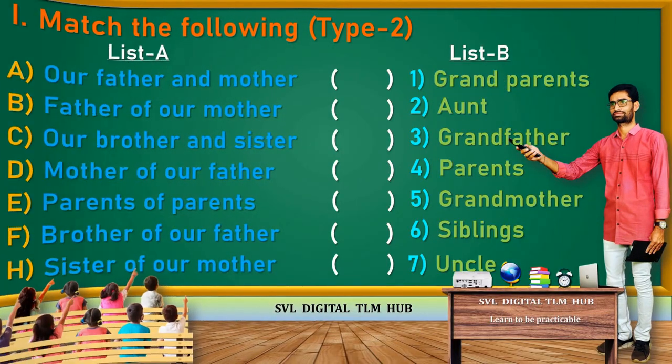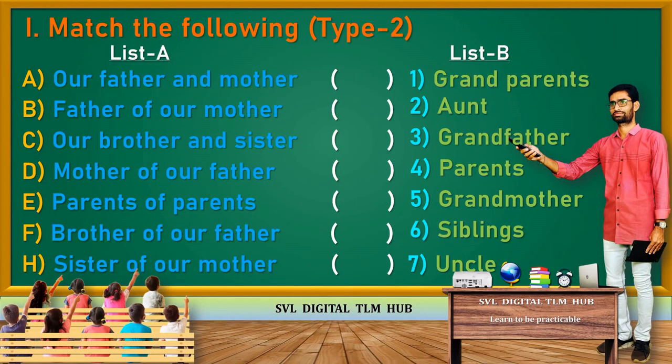Next one. Match the following, Type 2. List A, List B. Under List A: A. Our Father and Mother. B. Father of Our Mother. C. Our Brother and Sister. D. Mother of Our Father. E. Parents of Parents. F. Brother of Our Father. H. Sister of Our Mother. Under List B: 1. Grandparents. 2. Aunt. 3. Grandfather. 4. Parents. 5. Grandmother. 6. Siblings. 7. Uncle.